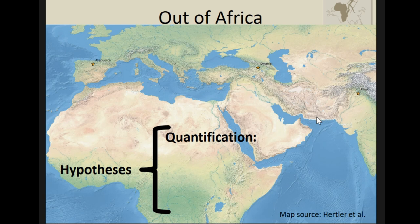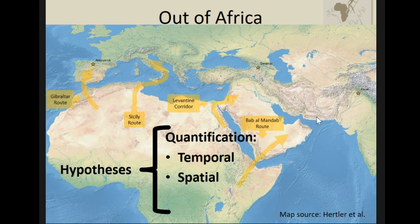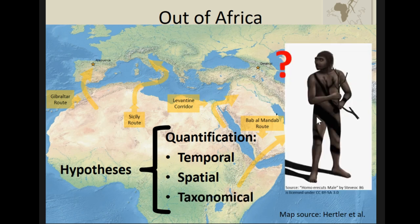For comparison, we always need some kinds of measurements. For example, we have temporal measurements: when was the first dispersal, how many times did they disperse, and how fast. We also have spatial components: where was the origin, what route did they take, and what was the extent of the initial expansion. And of course the question of taxonomy — was there a difference between Homo erectus or Homo sapiens, or were even earlier forms involved in the dispersal?